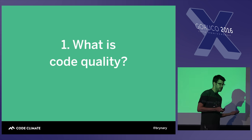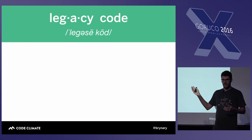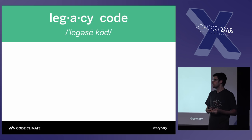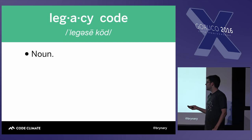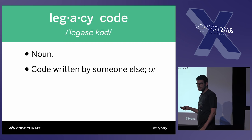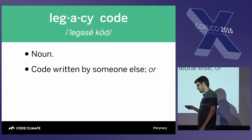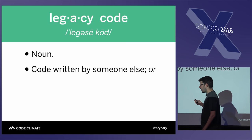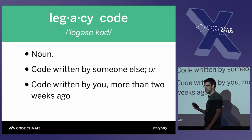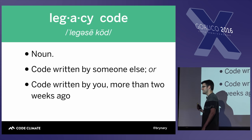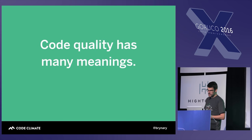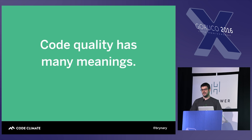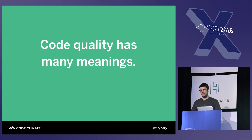Everybody is probably familiar with legacy code. This is often described as the opposite of code quality. The definition of legacy code: it's a noun, it means code written by somebody else — or code written by me more than two weeks ago. That is legacy code. So anything that's not legacy would be quality. Of course, we realize that code quality has many meanings.